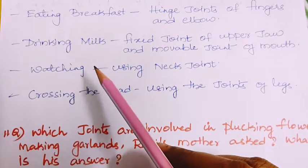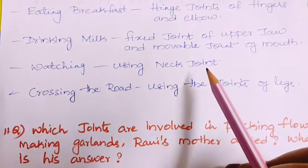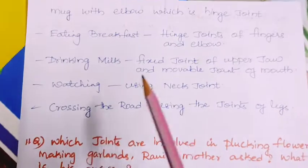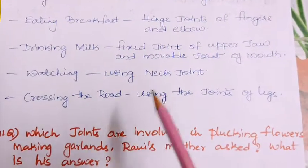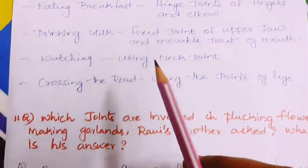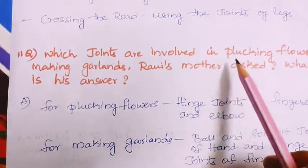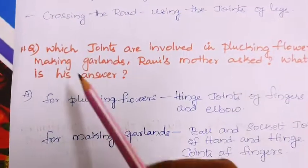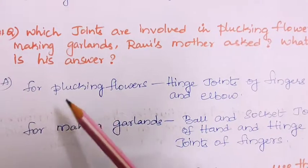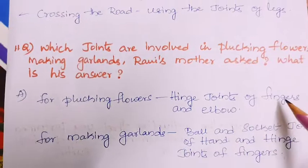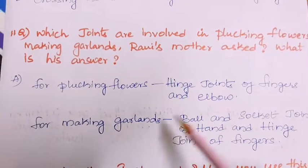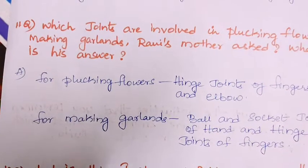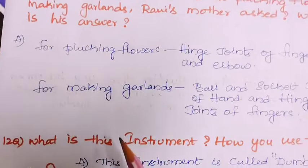For drinking milk, the fixed joint of the upper jaw and the movable joint of the mouth are used. For watching anything, we move our head using the neck joint. For crossing the road, we use the joints of the legs. Eleventh question: which joints are involved in plucking flowers and making garlands? Hinge joints of fingers and elbow are used for plucking flowers. Ball and socket joints of the hand and hinge joints of fingers help in making garlands.